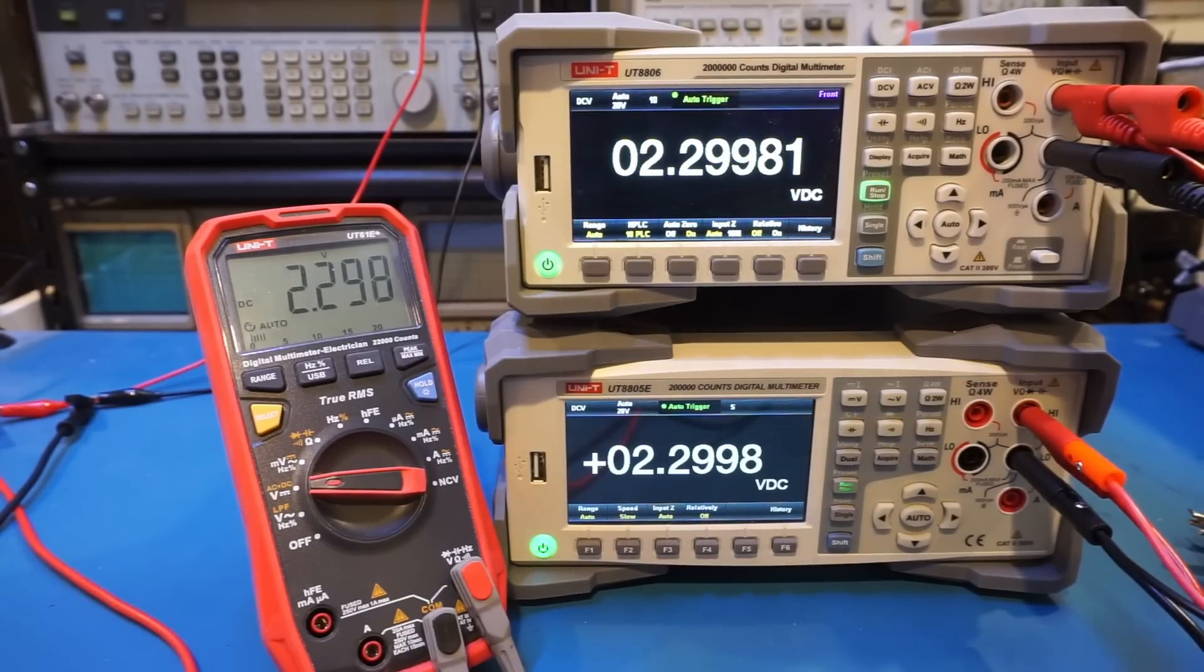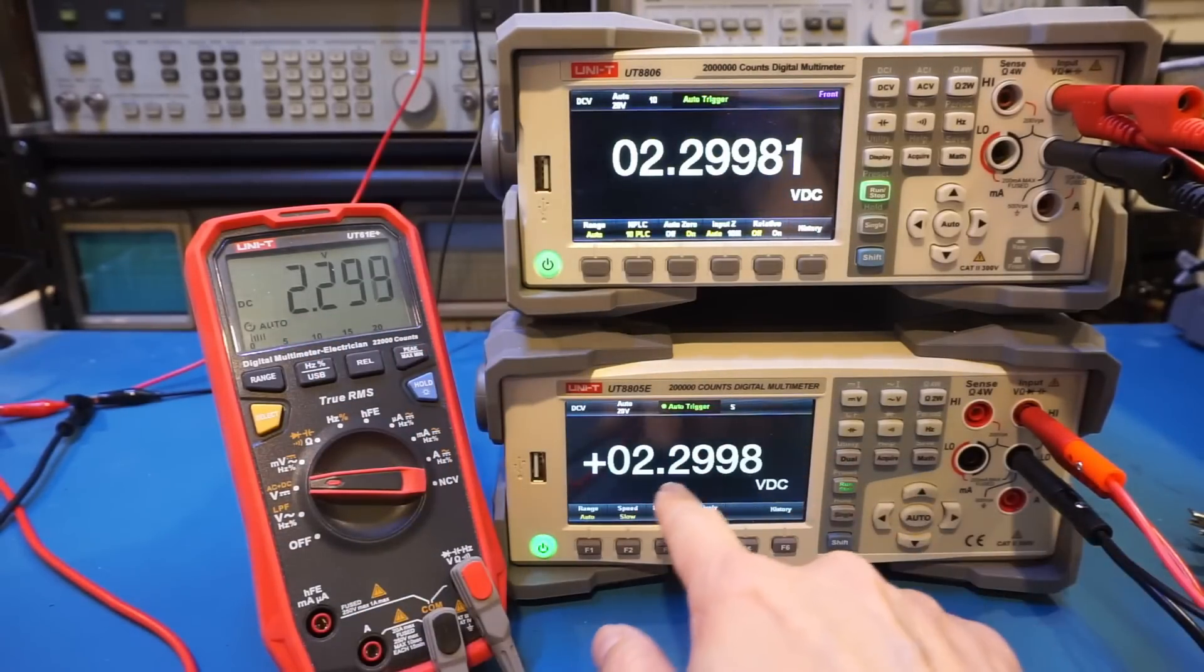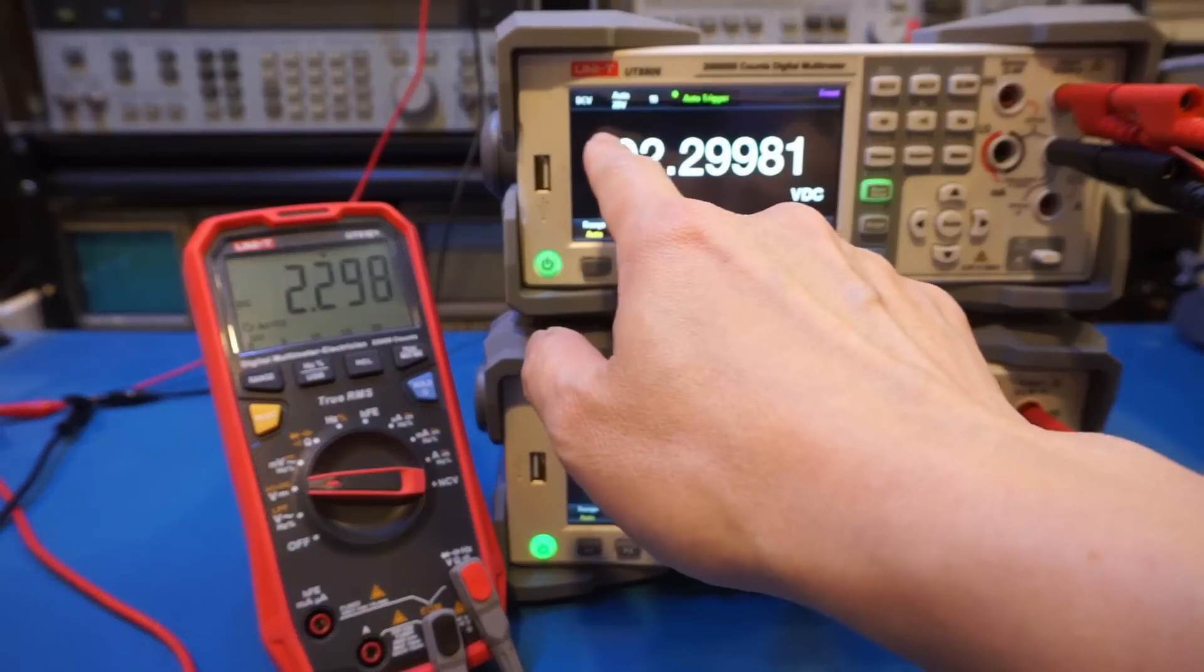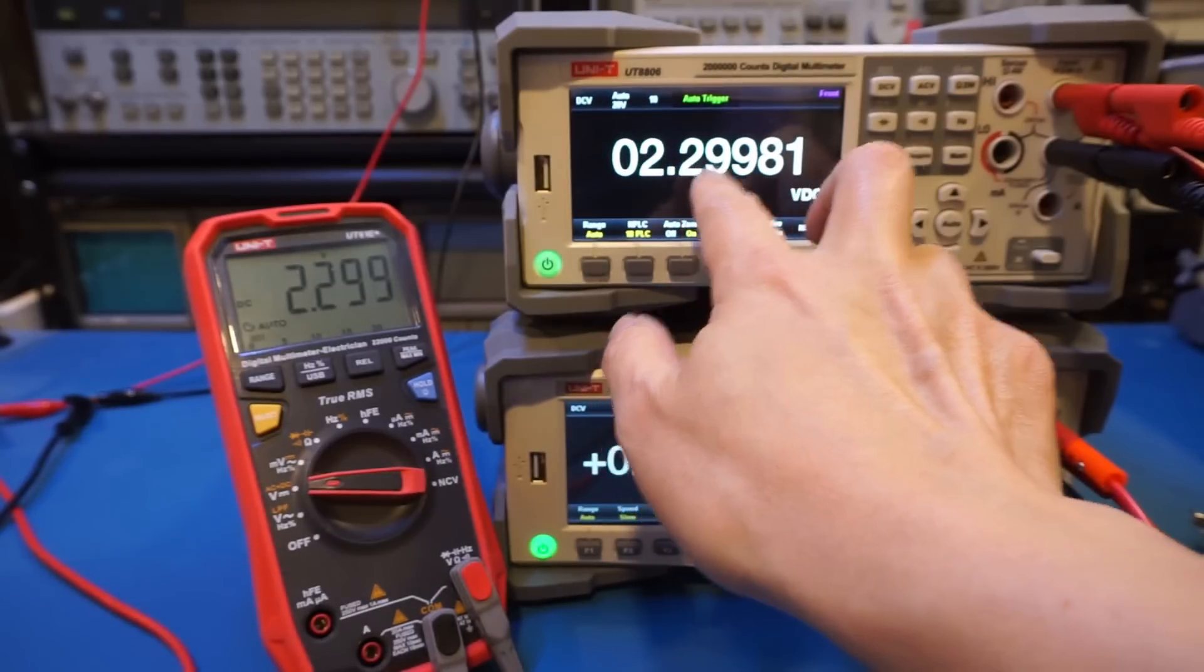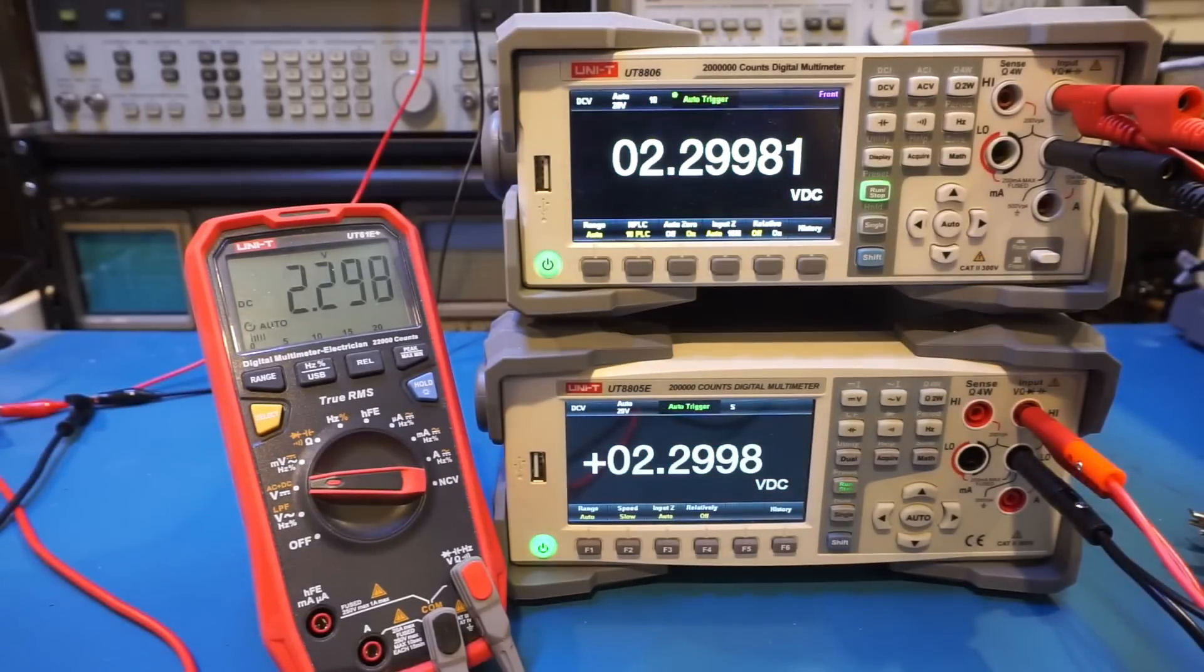So now on this UT61E+, we get only 3 digits, and on the 8805E we have 4 digits, and then on the 8806E we have essentially 1, 2, 3, 4, 5, 5 digits after decimal place. So the counts of a multimeter is pretty easy to grasp.